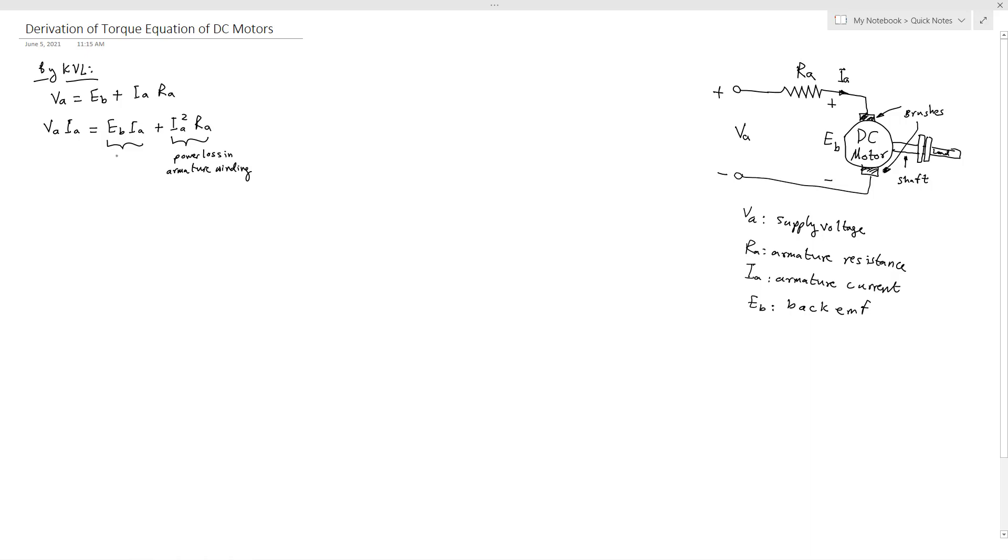So we will call it here mechanical power. So the mechanical power will equal to EB IA, and we can relate this power to the electromagnetic torque by using this equation PM equals torque multiplied by omega, because this shaft will rotate by omega.